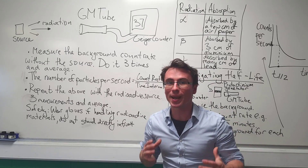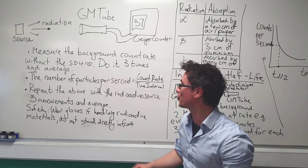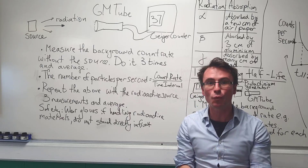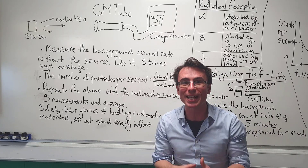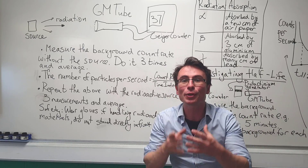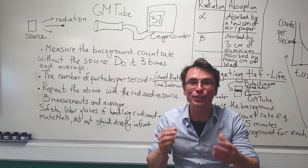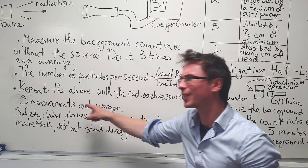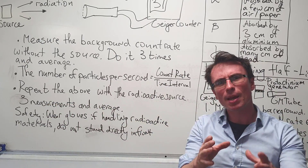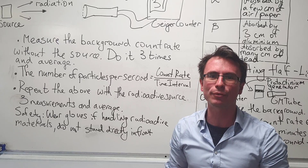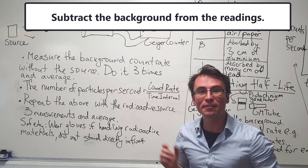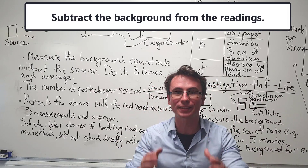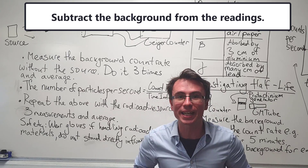Now that we have the background rate, we're going to repeat the above, but this time with the radioactive source placed in proximity or right in front of the GM tube. As always, we're going to take three measurements and then take an average. After we've done this, we need to subtract our background readings.